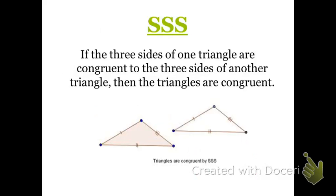First, let's look at the SSS, which stands for the Side-Side-Side Triangle Congruence Conjecture. That says that if three sides of one triangle are congruent to three sides of another triangle, then the two triangles are congruent.